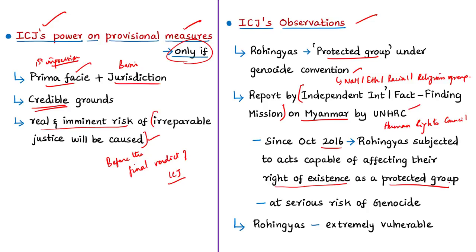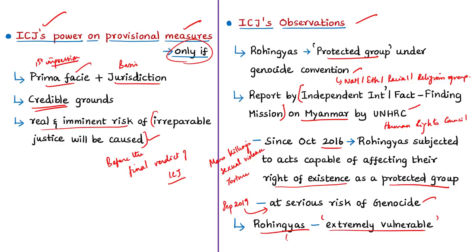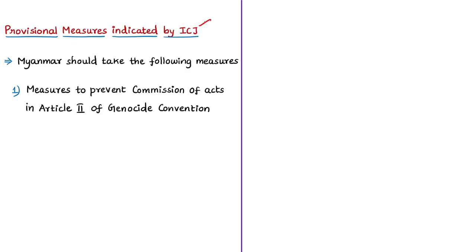The fact-finding mission report mentioned acts including mass killings, widespread rape, other forms of sexual violence, beatings, destruction of villages and homes, and denial of access to food, shelter, and essentials of life. The mission concluded in September 2019 that the Rohingya people remain at serious risk of genocide. Based on this report, the ICJ agreed that Rohingyas in Myanmar remain extremely vulnerable and unanimously indicated provisional measures for the protection of Rohingya rights.